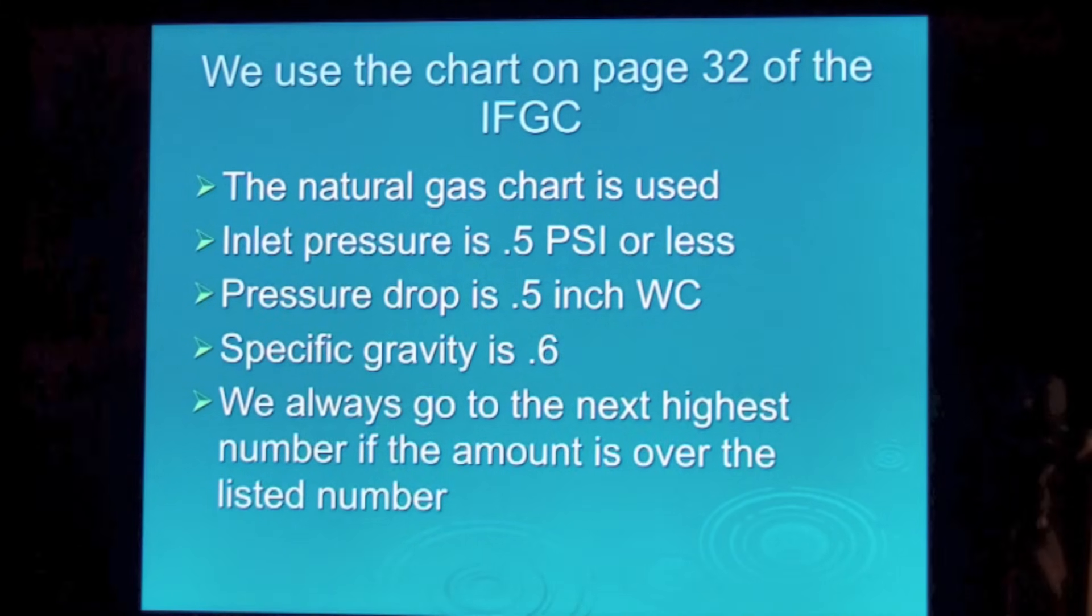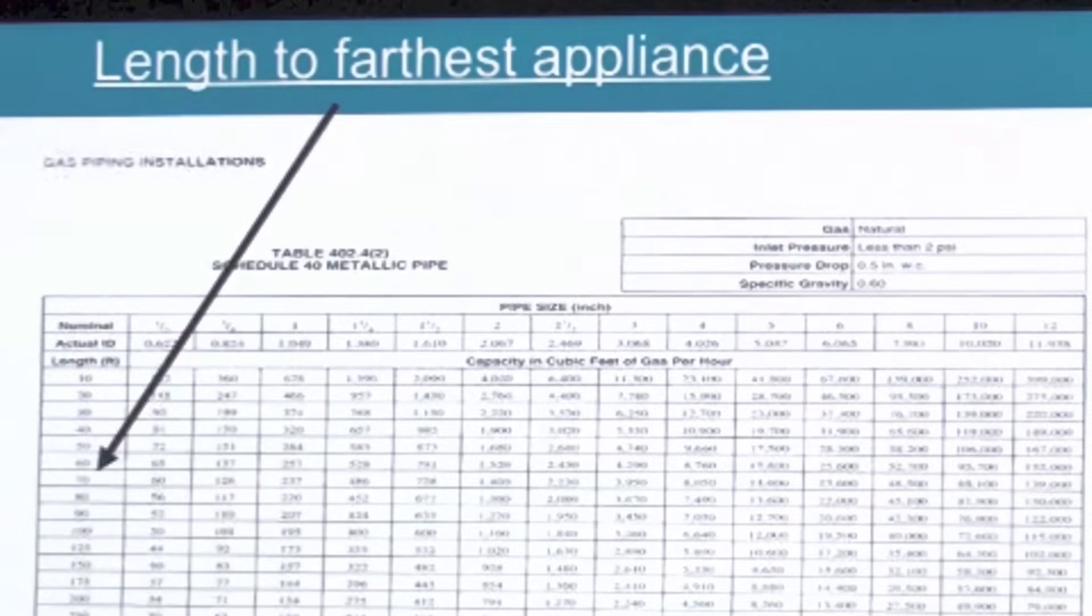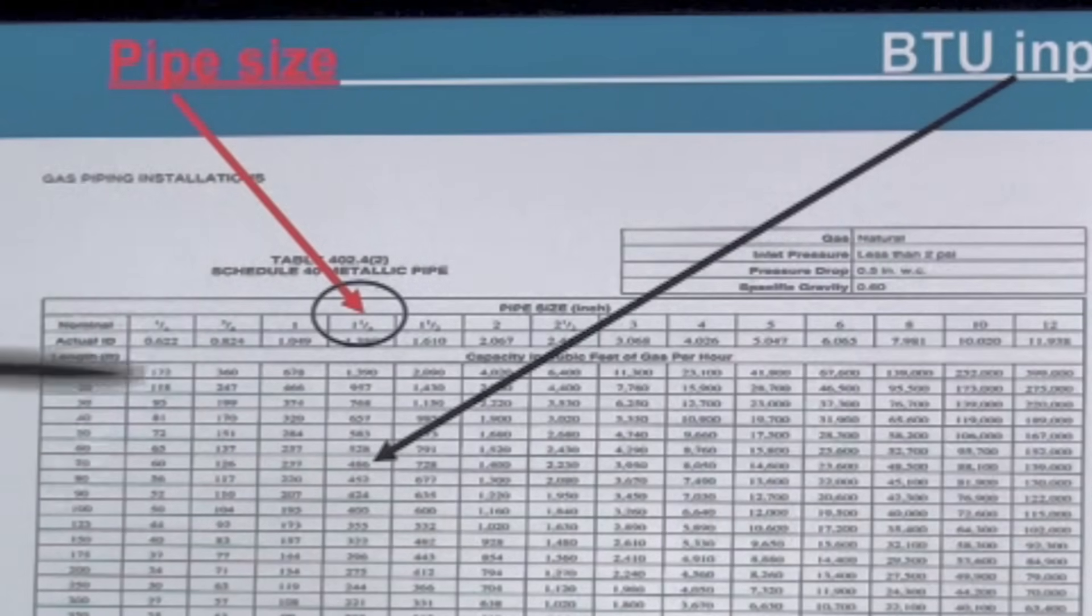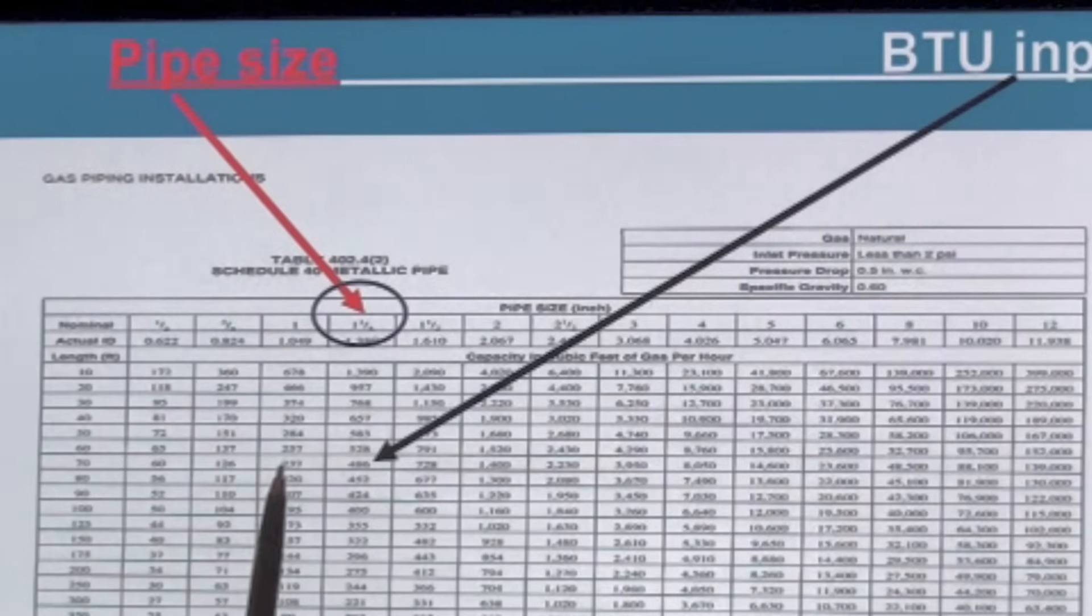Next highest number if the amount is over the listed number. Now I'm showing 70 feet. That number is given on the chart. This is the length in feet. And I go over and I find out the BTU input that is closest. Now I was 350,000 BTUs. If I used a one inch pipe along with this 70, I would end up with 237,000. That's less than 350 so it won't work. So we go to inch and a quarter which is 486.